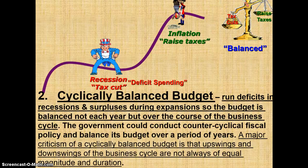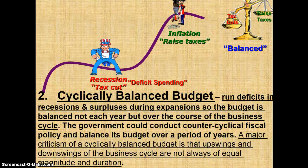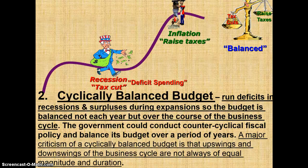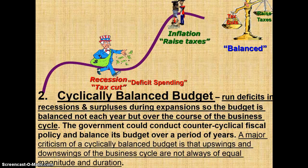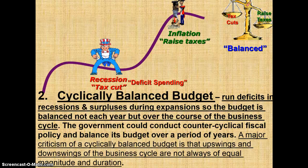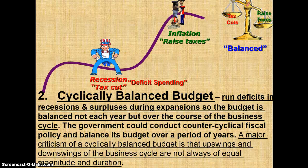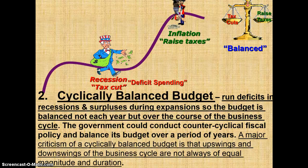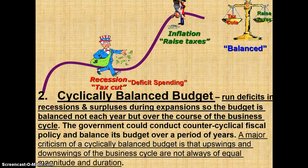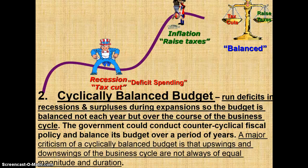Cyclically balanced budget: run deficits in recessions and surpluses during expansion so the budget is balanced — not each year, but over the course of the business cycle. The government could conduct counter-cyclical fiscal policy and balance its budget over a period of years. A major criticism of the cyclically balanced budget is that upswings and downswings of the business cycle are not always of equal magnitude and duration.